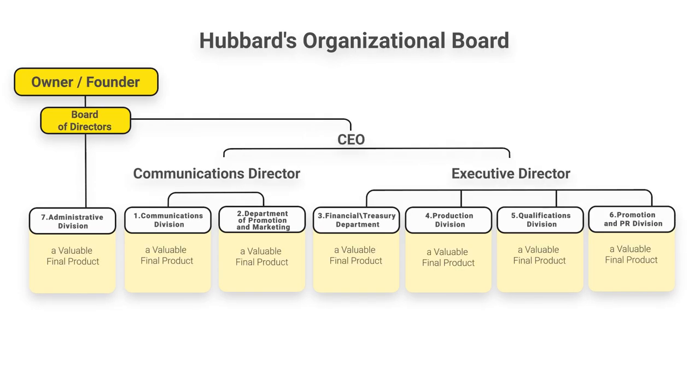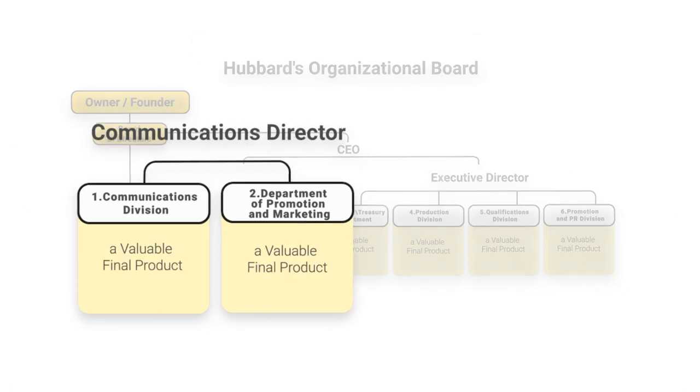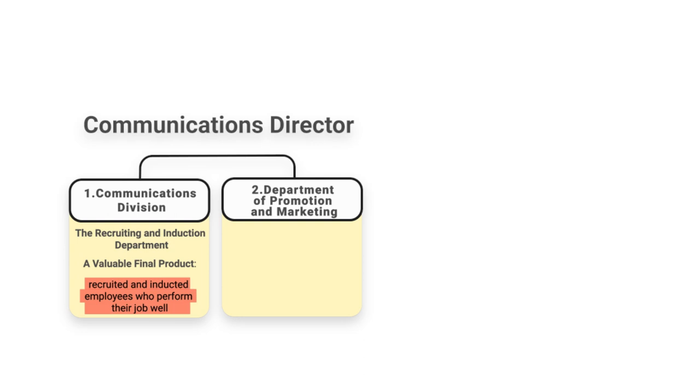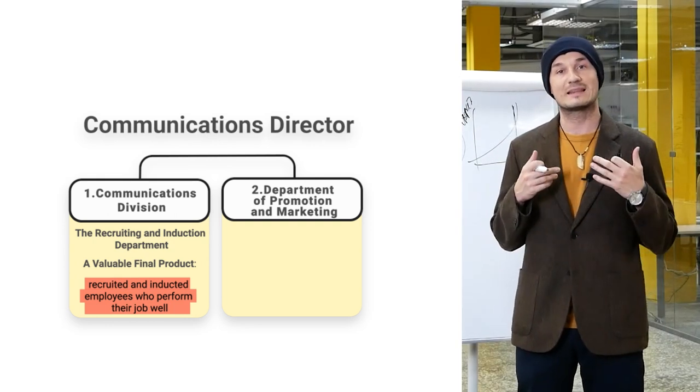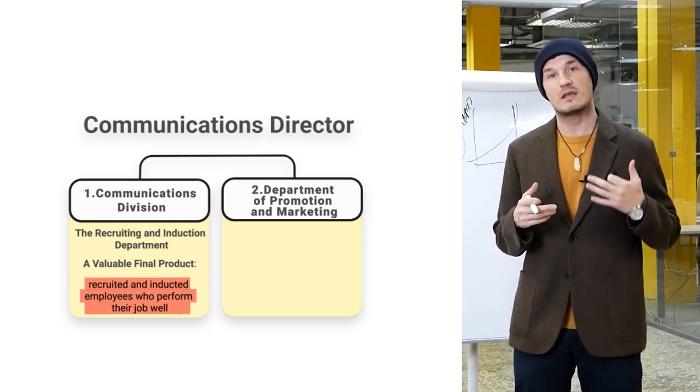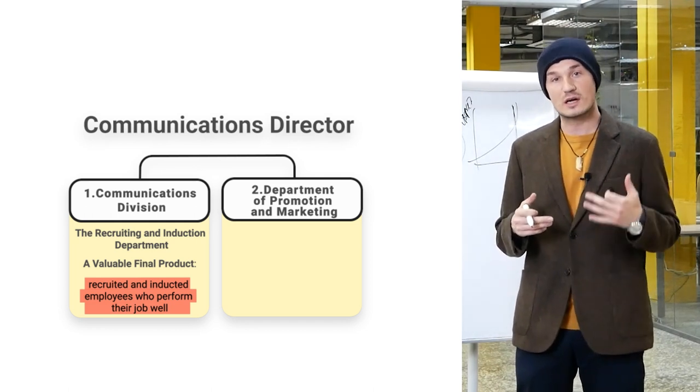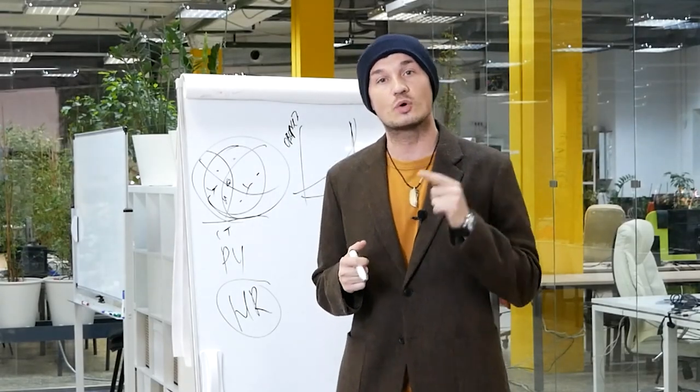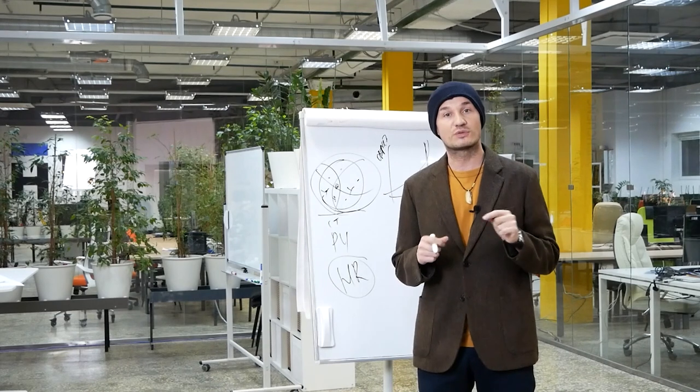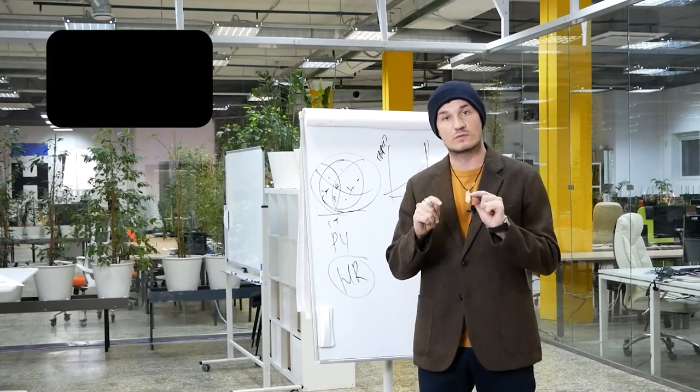For instance, let's take a look at the Hubbard's organizational board. We see that there is a communications division and there is the recruiting and induction departments. Let's call it an HR block or HR context. This department produces its valuable final product, which can be defined as recruited and inducted employees who perform their job well. This division will be fully responsible only if it has the full power to execute its valuable final product.